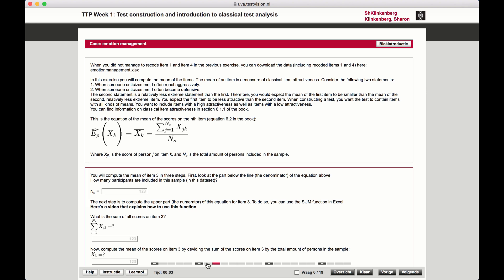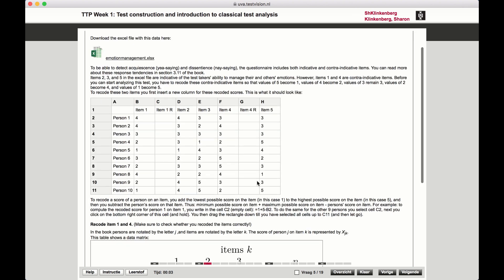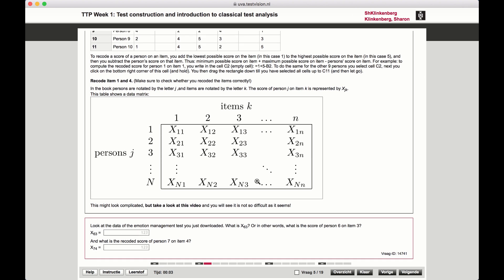And if we look at this matrix again, what are we summing over then? Well, we're summing over some person value J1 until capital letter N. So if we want to sum over item K, let's say item 1, then we will sum all these values.